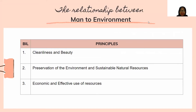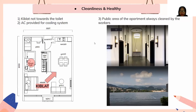Moving to the relationship between man and the natural environment, we have three principles: cleanliness and beauty, preservation of the environment and sustainable natural resources, and economic and effective use of resources. For cleanliness: the toilet and sink are correctly oriented and not facing the toilet direction. Air conditioning is provided for a comfortable cooling system, and the public areas of the apartment are regularly cleaned by workers.